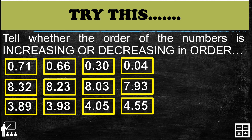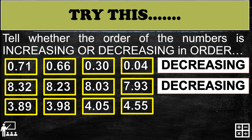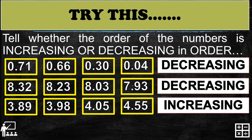I'll show you my answer and compare with your answer. The first set is in decreasing order, because it starts with the largest number down to the smallest. Next, decreasing order again. And last, increasing order, because it starts from the smallest up to the largest number.